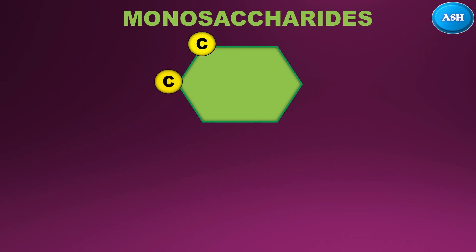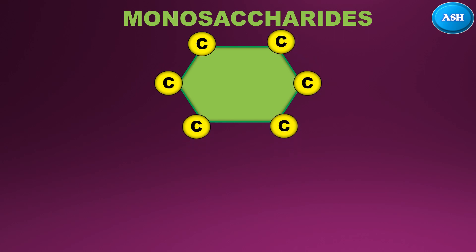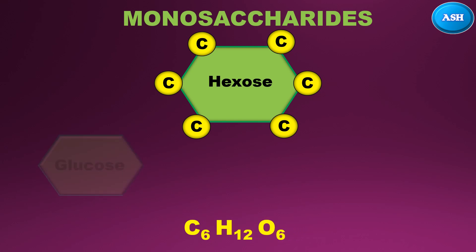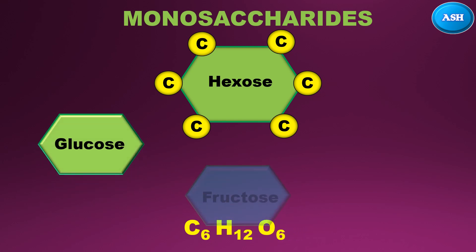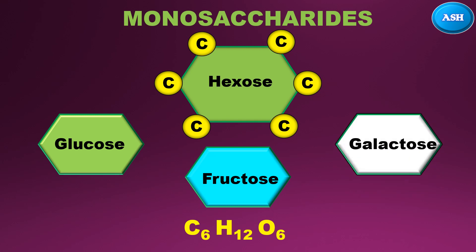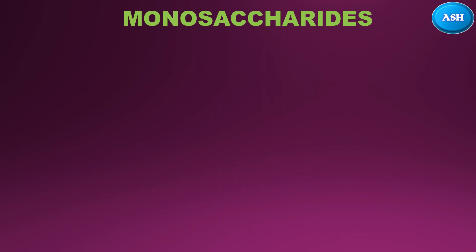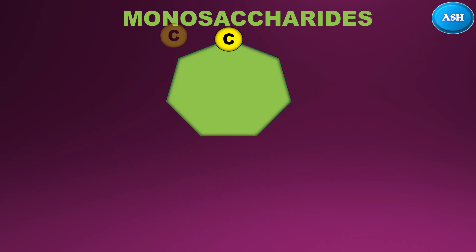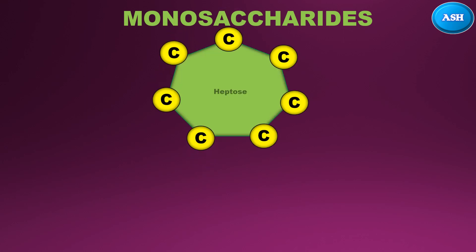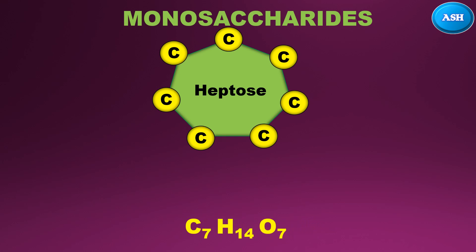Here comes the main sugar of living organisms, which has six carbon atoms, known as hexose. The general formula is C6H12O6, and examples are glucose, fructose, and galactose. The last monosaccharide has seven carbon atoms, known as heptose. The general formula is C7H14O7, and the example is sedoheptulose.